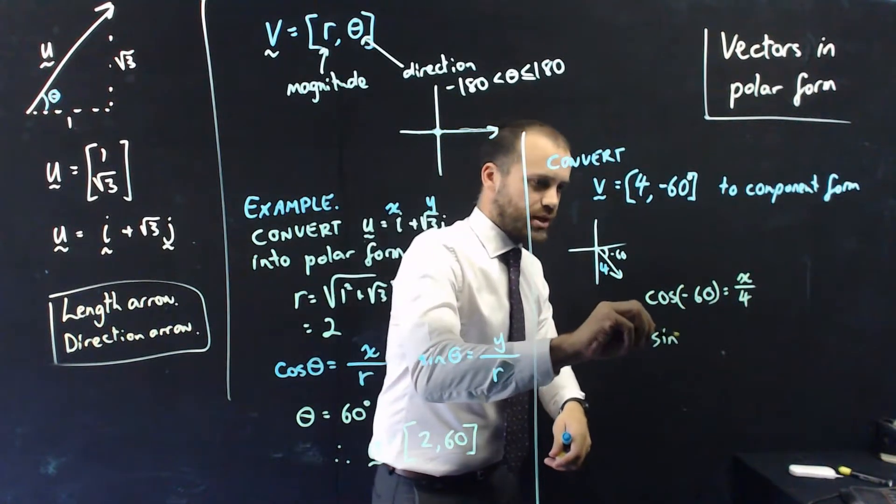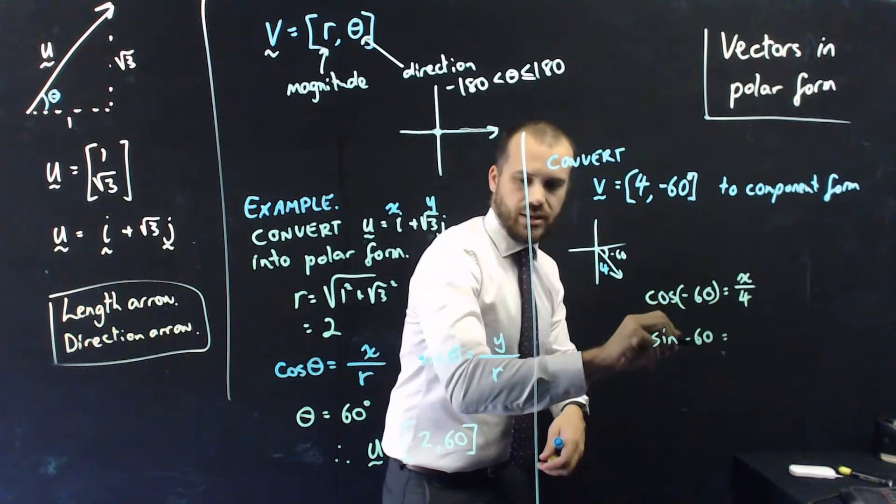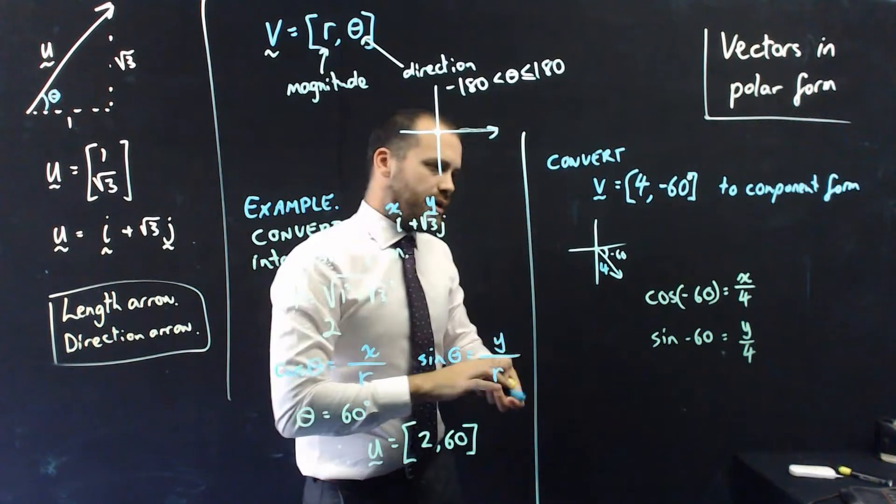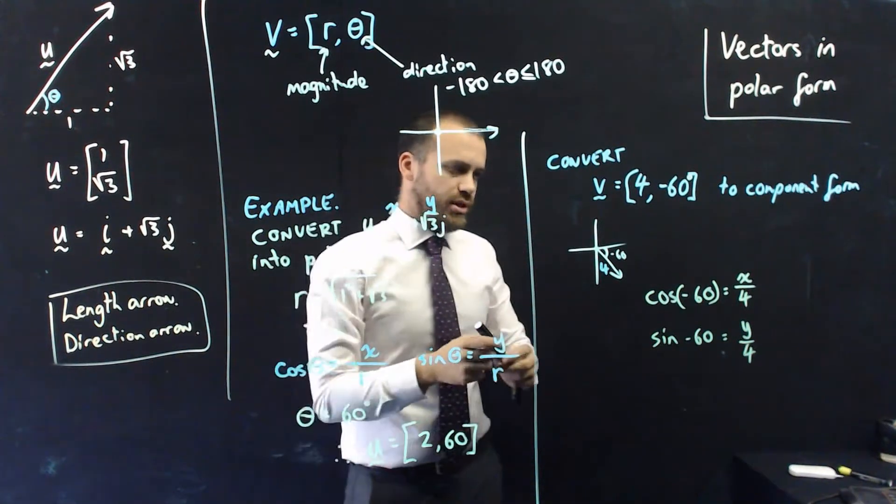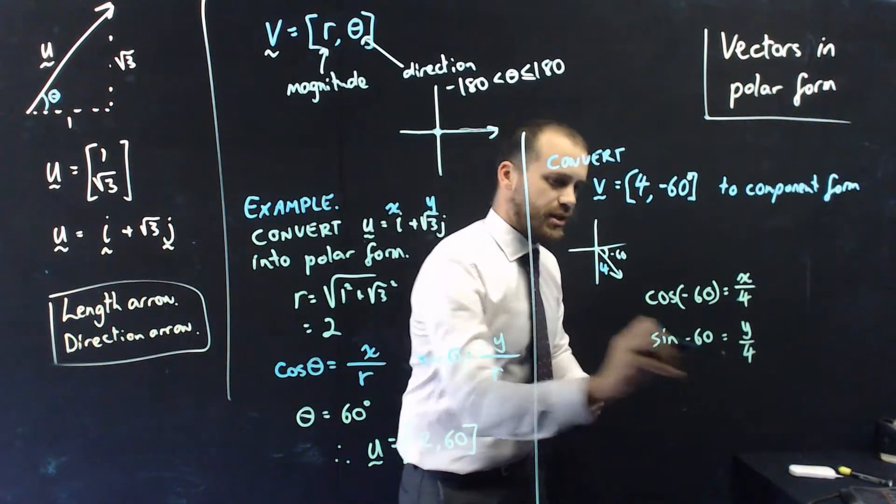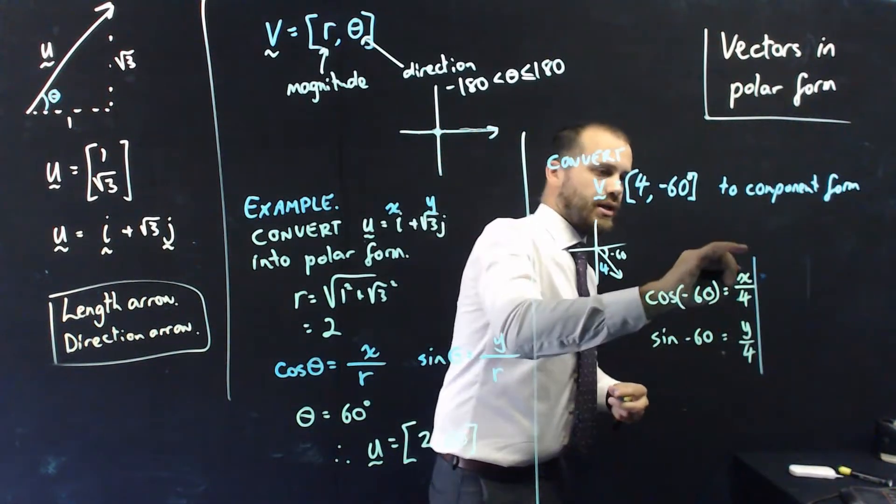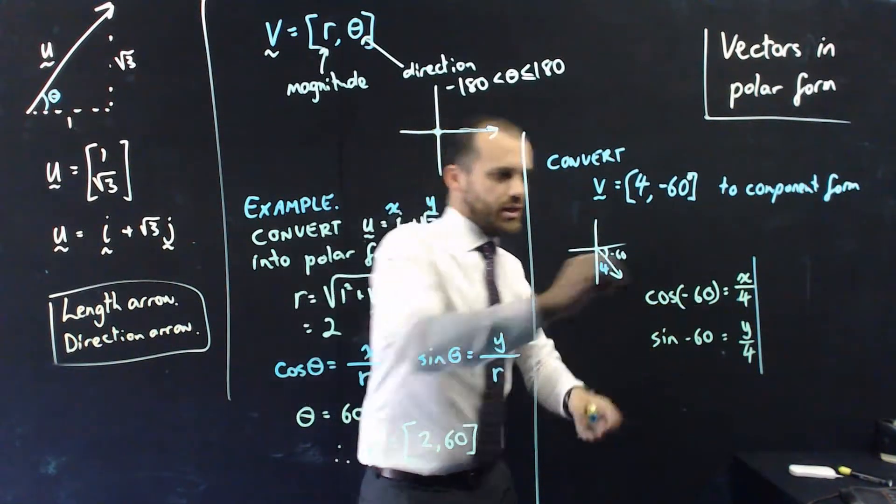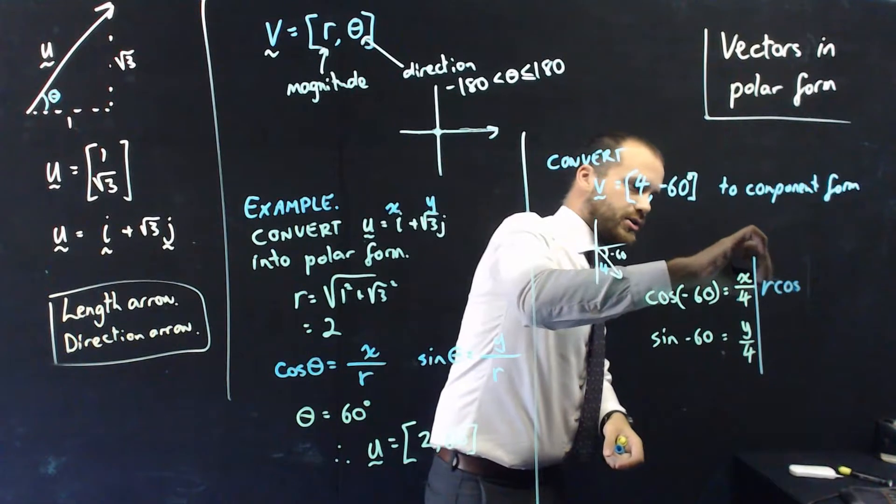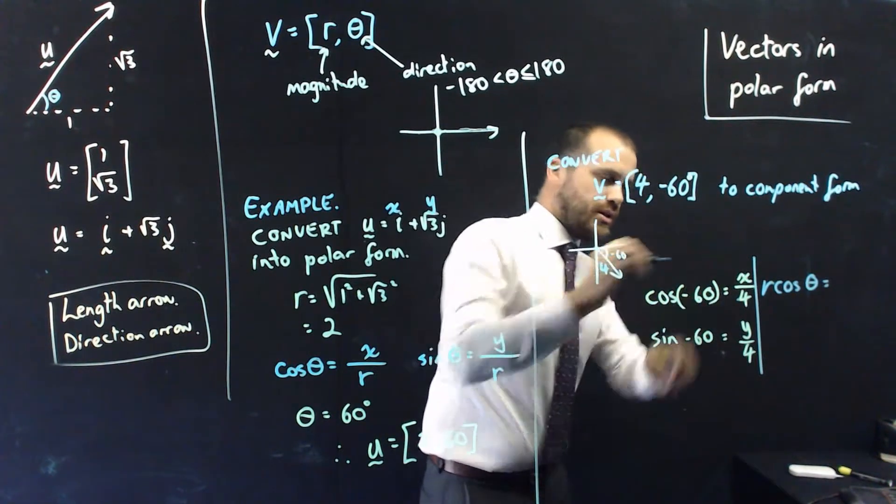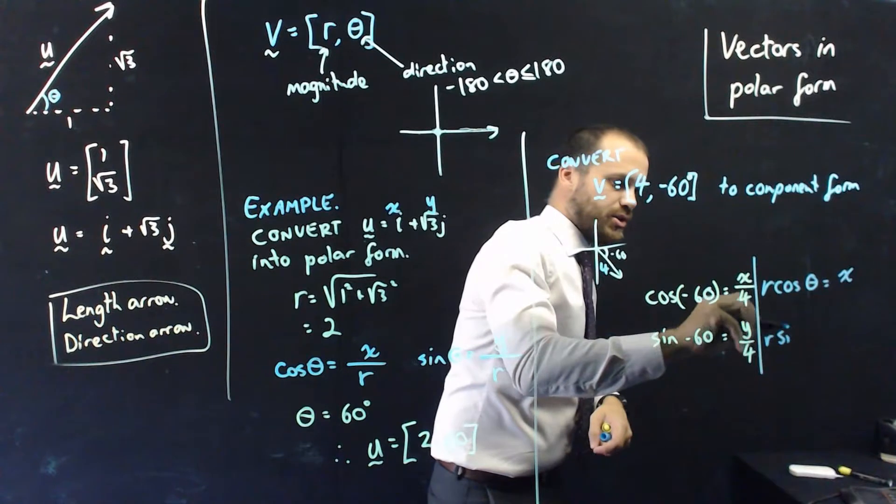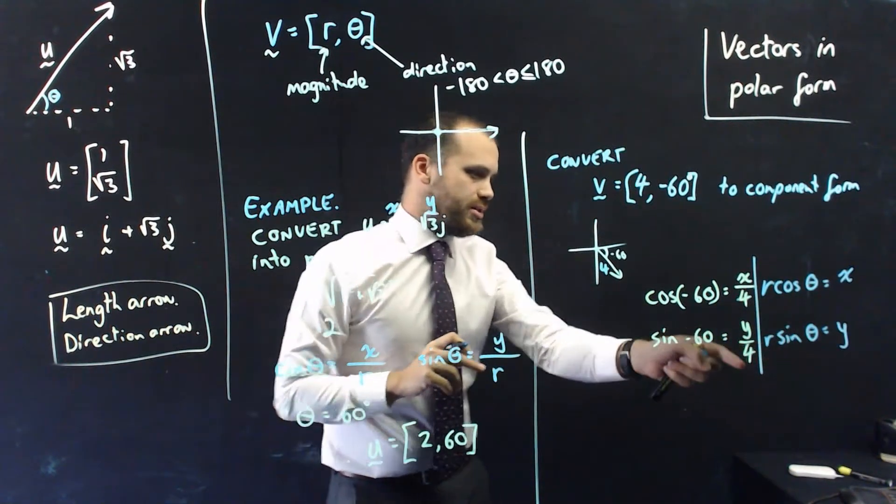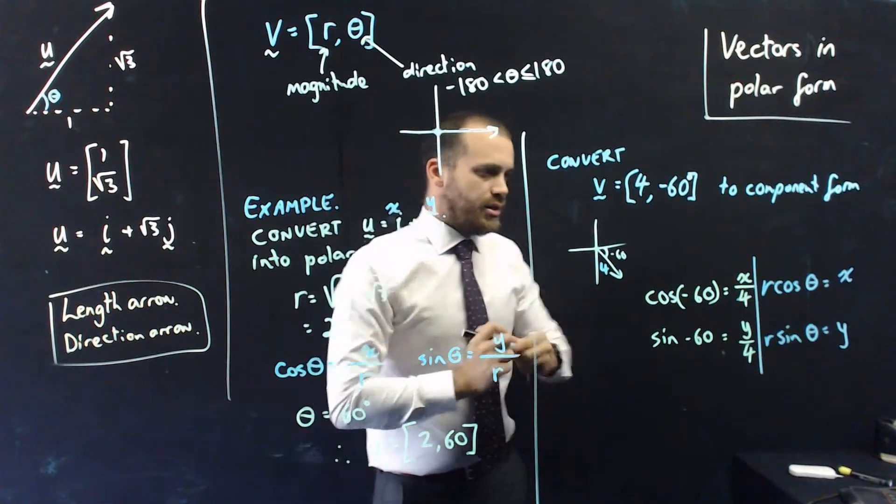And I can say that sine negative 60 equals y over 4. Now, traditionally, this formula is written a little more like that, 4 goes over there and that 4 goes over there. So, the formula, I guess, that you would use is r cos theta equals x and r sine theta equals y. In both cases, I'm just bringing that r up there. Alright, so,